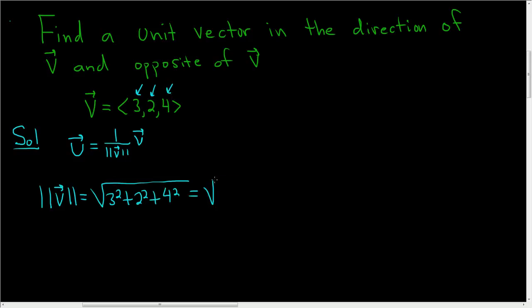So this is equal to the square root of 9 plus 4 plus 16. Right, 3 squared is 9, 2 squared is 4, and 4 squared is 16. So we get 13 plus 16, so 29. So going back to our formula, we have 1 over the square root of 29.